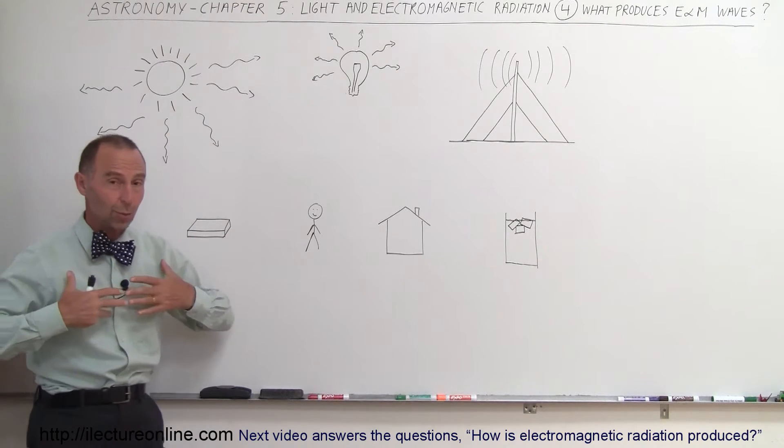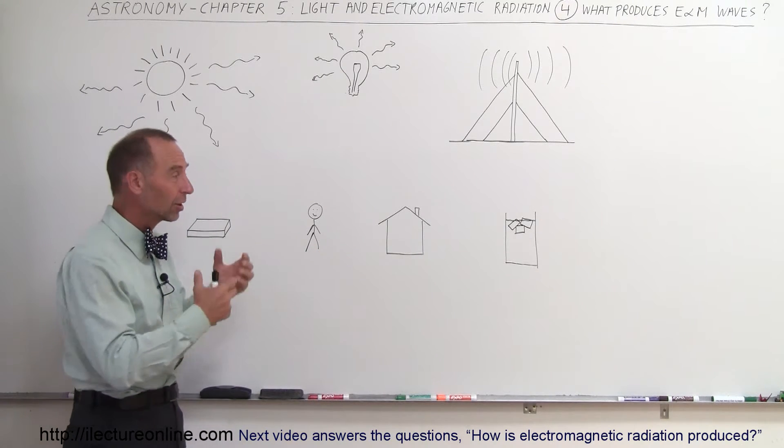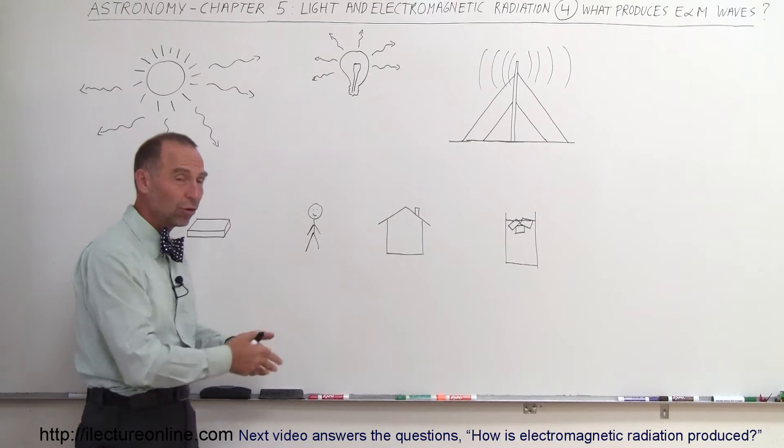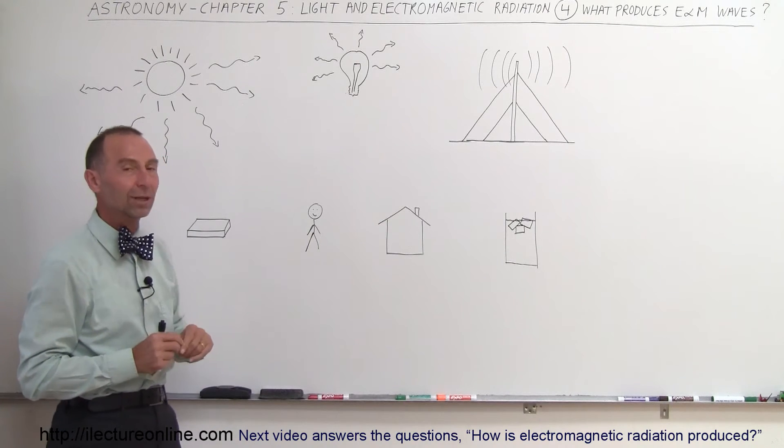People, we produce electromagnetic radiation. Houses, everything in the houses, the couches, the floors, the ceilings, you name it, the bathtub, the stove, everything and anything in the house produces electromagnetic radiation.